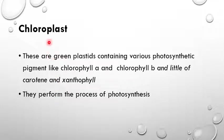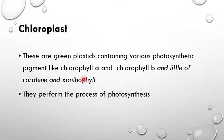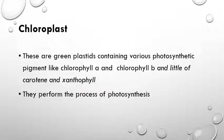Chloroplasts are green plastids containing various photosynthetic pigments like chlorophyll A, chlorophyll B, and small amounts of carotene and xanthophyll. They perform the process of photosynthesis. These plastids are present only in plant cells because plants carry out photosynthesis due to the presence of the pigment chlorophyll.